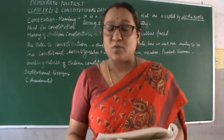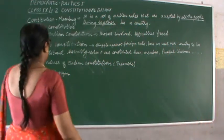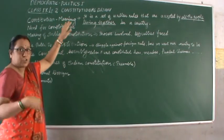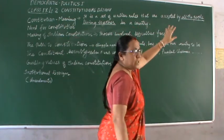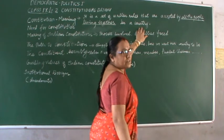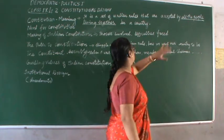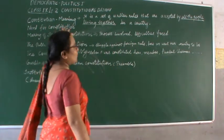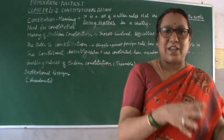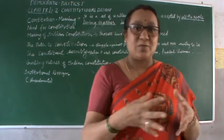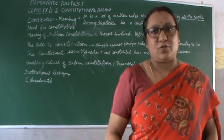India's constitution was also drawn up under very difficult circumstances. To recapitulate — the constitution is a set of written rules accepted by all the people living together in a country. We need a constitution because we have lots of diversity, we need to accommodate this diversity, and we need a framework within which the government can work. The relationship between the people and the government is specified in the constitution. Next, we look into the making of the Indian constitution.